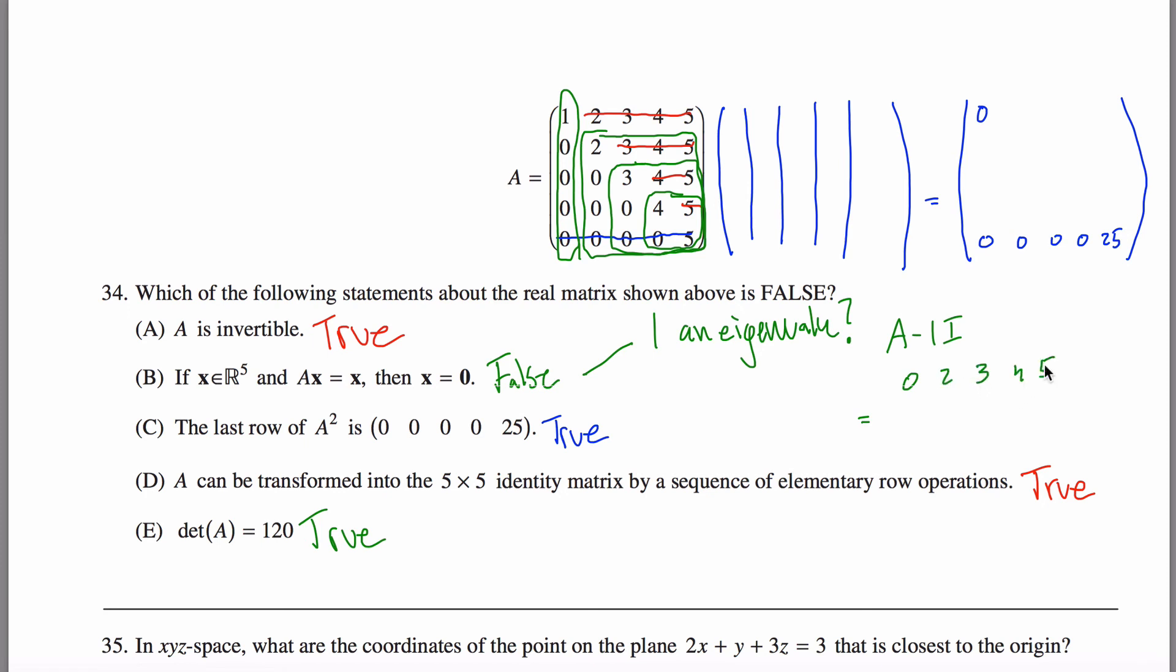So A minus one I would be equal to: zero, two, three, four, five; zero, one, three, four, five; zero, zero, two, four, five; zero, zero, zero, three, five; and zero, zero, zero, zero, four.